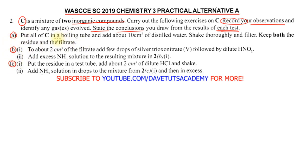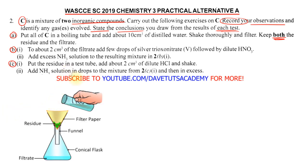First, we put all of C in a boiling tube and add about 10 cm³ of distilled water, shake thoroughly and filter — keeping both the residue and the filtrate. This is highlighted: we keep both the residue, which is the solid part, and the filtrate, which is the soluble part.